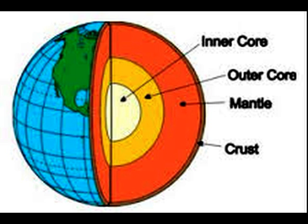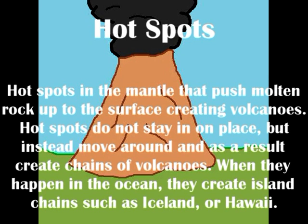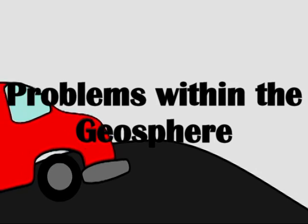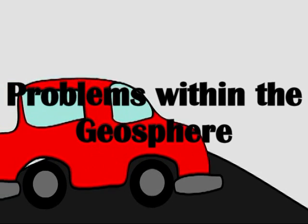Volcanoes can also form where there are hot spots in the mantle, which allow molten rock to push up through the surface and create island chains. They create chains because these hot spots tend to move around a lot — that's why you get the island chains of Hawaii and Iceland.